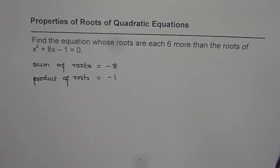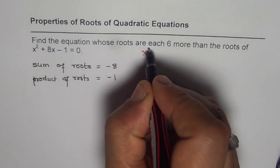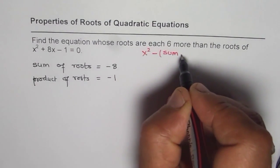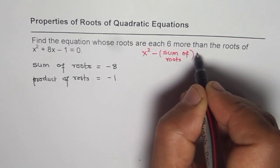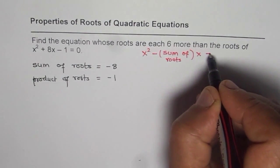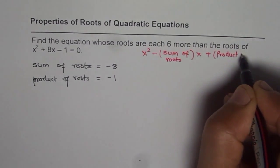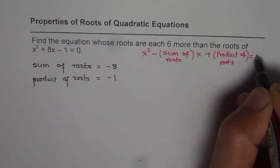As you remember, we could always write a quadratic equation as x² - (sum of roots)×x + (product of roots) = 0.